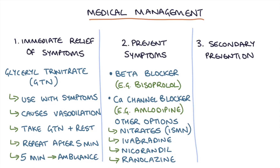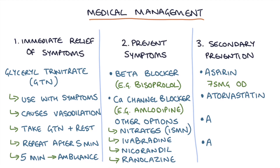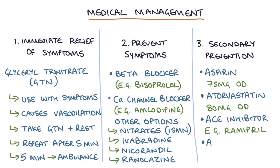For secondary prevention, we can remember the four A's. First, aspirin 75mg once a day; second, atorvastatin 80mg once a day; third, an ACE inhibitor such as ramipril titrated to the maximum tolerated dose; and the fourth A is usually atenolol, which indicates they need a beta blocker — though they're most likely already on one for symptomatic relief.